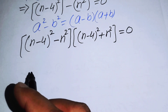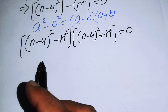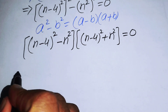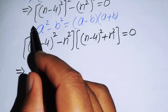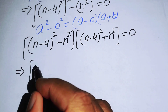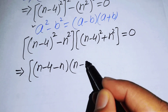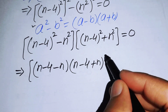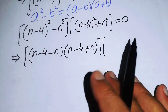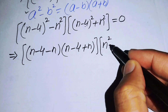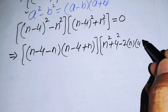In the next step we open these two squares. For the first factor, (n minus 4)² minus n², we apply the difference of squares formula again to get (n minus 4 minus n)(n minus 4 plus n). For the second factor we expand (n minus 4)² to get n² plus 16 minus 8n, then add n².